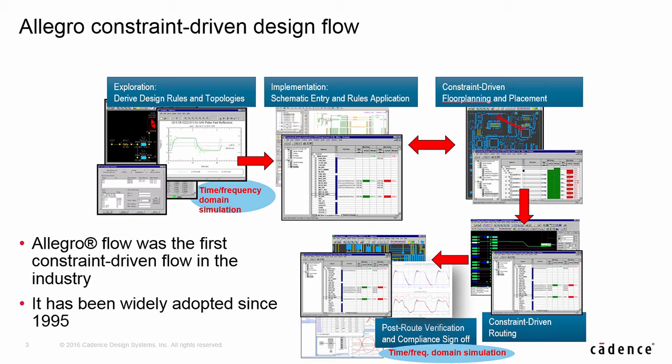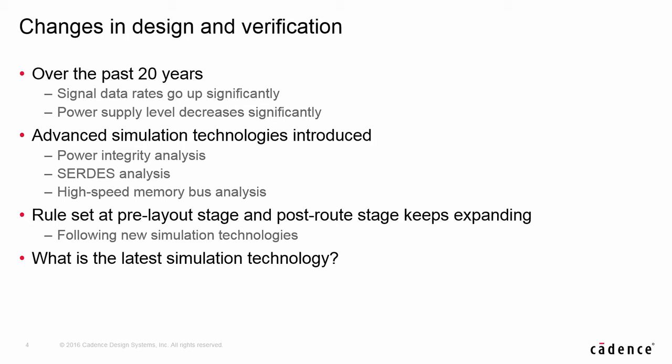Let's go back a little to see how the sign-off flow we just discussed evolved. The flow is basically constraint-driven without integration with the layout environment. It originated from the first industry constraint-driven flow — the Allegro constraint-driven flow — which was introduced to designers in 1995. The constraint-driven flow first contained only rules to prevent problems with SI and EMI. Over the past 20 years, as technology advanced, signal rates went up and power supply levels went down. New simulation methodologies were introduced, like PI analysis, 3DS analysis, and high-speed memory bus simulations. More rules were introduced, for example, decoupling capacitor placement rules for PI applications and differential signal rules for serial link designs.